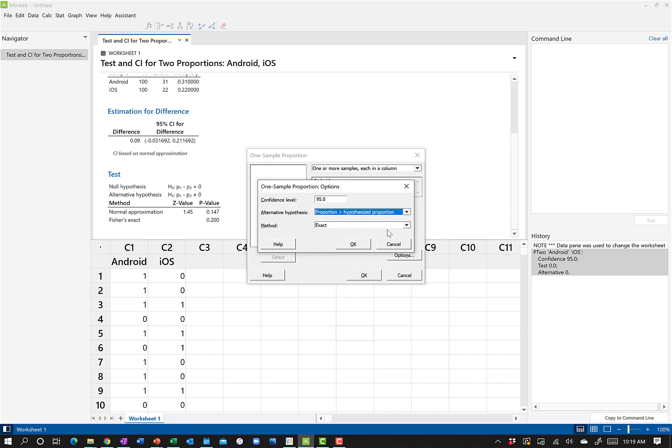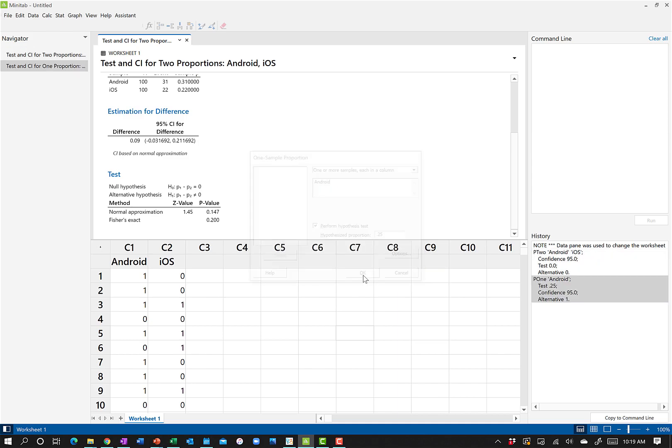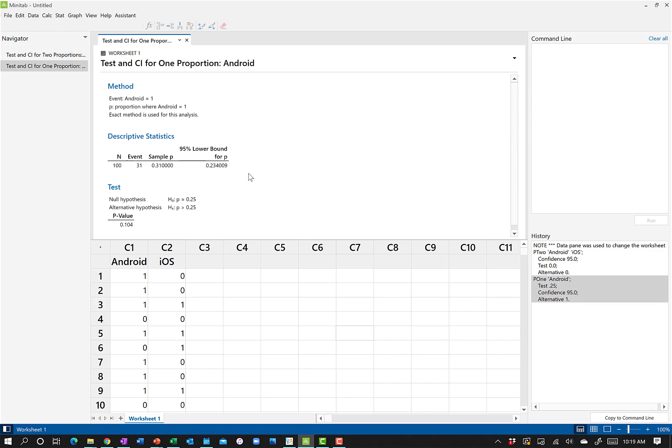Under options, we're going to say our alternative hypothesis is that our proportion is greater than the hypothesized proportion. Hit OK, hit OK, and our results come that our p-value is 0.104, so still not significant at the 0.05 level. But you could say with almost 90% confidence that the true proportion of Android users is greater than 25%. You just couldn't say it at the 95% level.